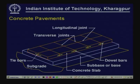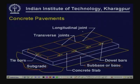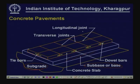Right at the bottom you will have the subgrade, above which there will be a sub-base or base, over which will be placed a number of panels of concrete slabs. How many panels and what size will depend on what is the width of the pavement being constructed — one lane, two lanes, four lanes — accordingly you may see a number of lanes. The size of the slab will also be dependent on the width of the pavement being constructed.